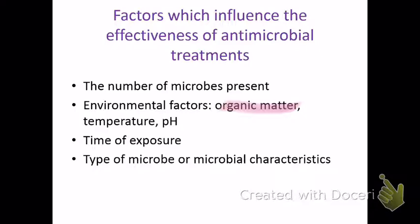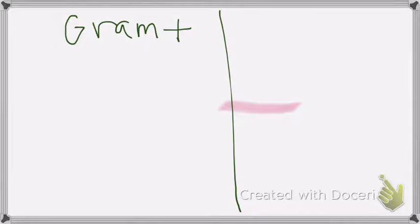And then the type of microbes. Now remember, we wrote this in on the last test, or we had it on the last test. For type of organism, we talked about the difference in gram positive versus gram negative.